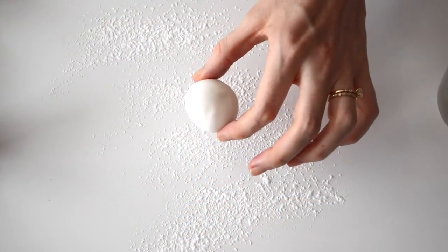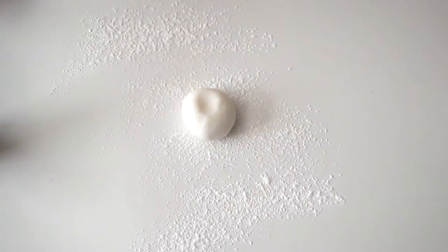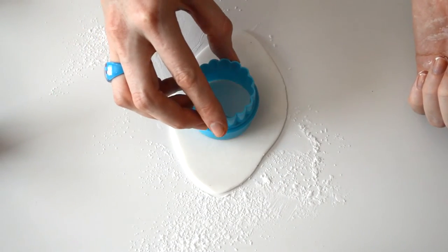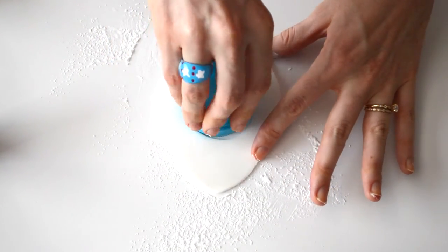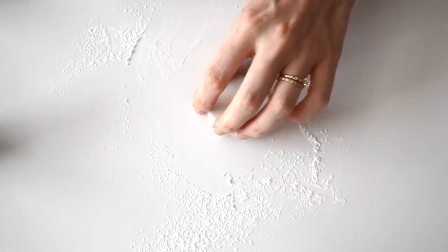We're going to start making the tuxedo. First off we're going to make the white blouse, so just take some of that fondant and roll it out. Then we're going to take that cutter, cut out a little circle, and put that to the side.